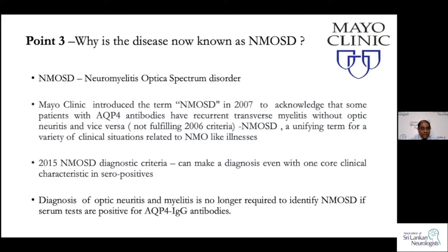These patients were not fulfilling the 2006 Wingerchuk criteria because they had either optic neuritis or myelitis recurring with the antibody. That is why the term neuromyelitis optica spectrum disorder was used. However, from 2015, the diagnostic criteria changed. Now it is possible to make the diagnosis in the presence of the antibody whether you have only optic neuritis or only myelitis — just one core clinical criterion is sufficient.